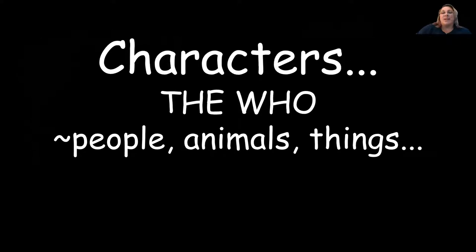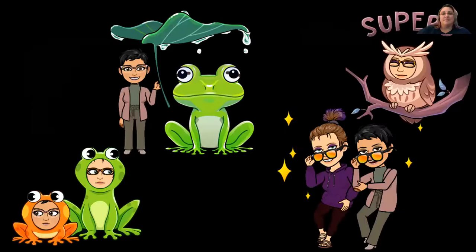Next, you want to tell the characters — the who of the story. People, animals, or things. So let's see who's in our story. We have frog, Mrs. J and I as frogs, and maybe an owl. Here's Mrs. J and I.